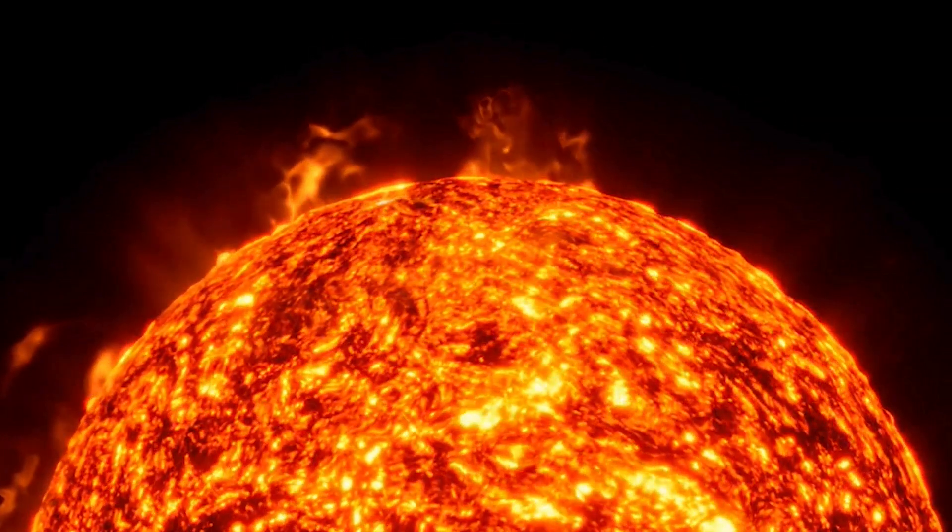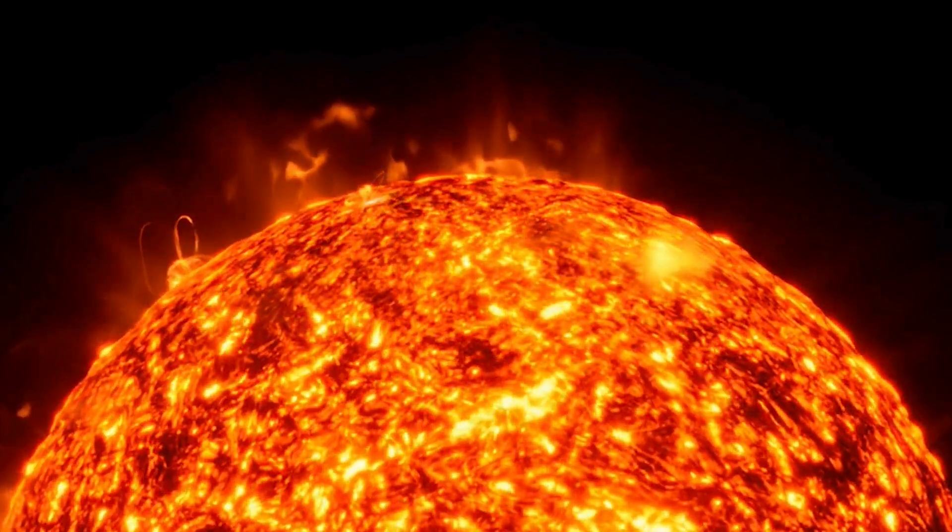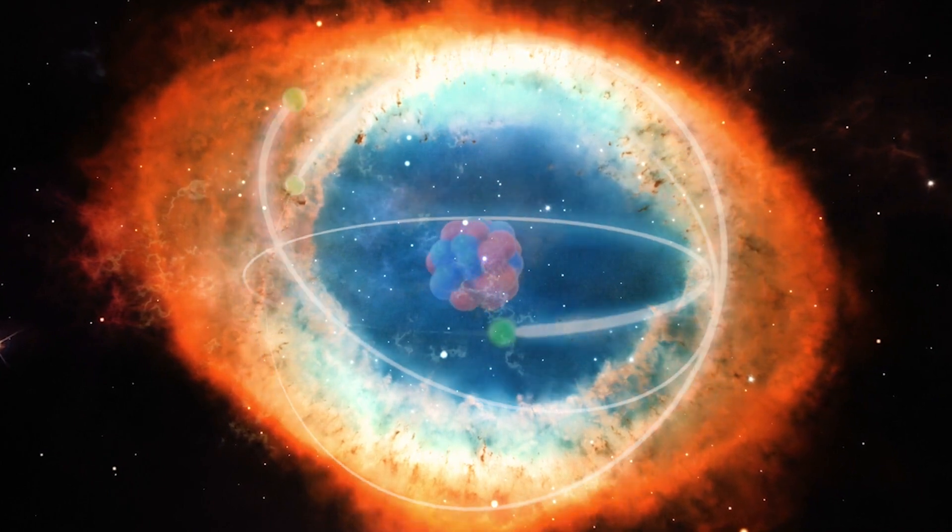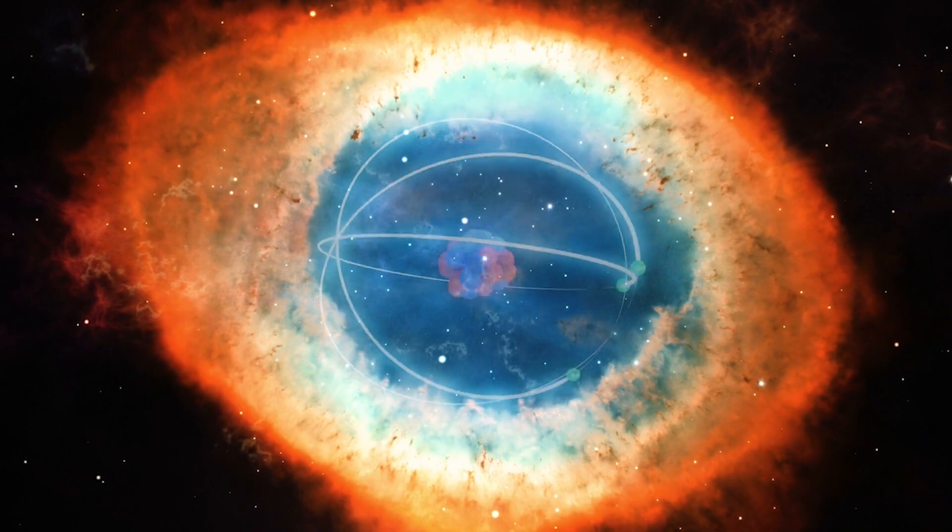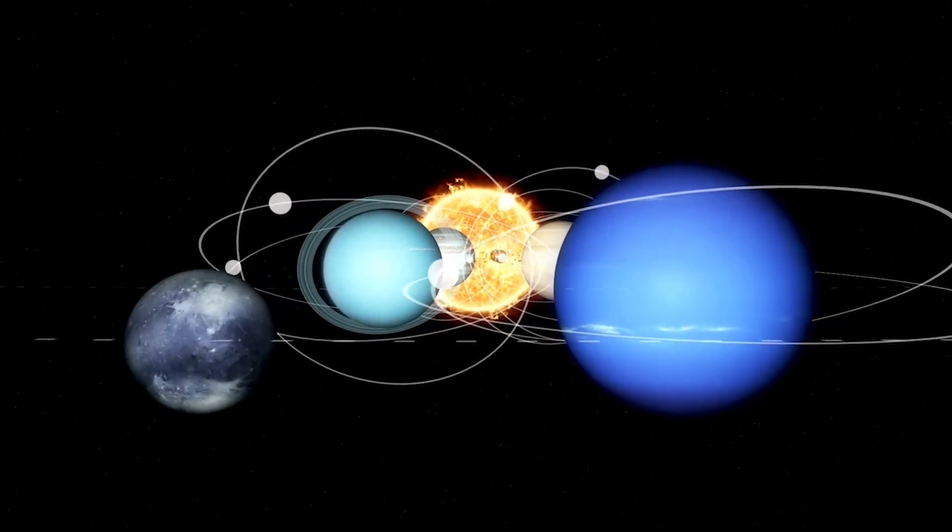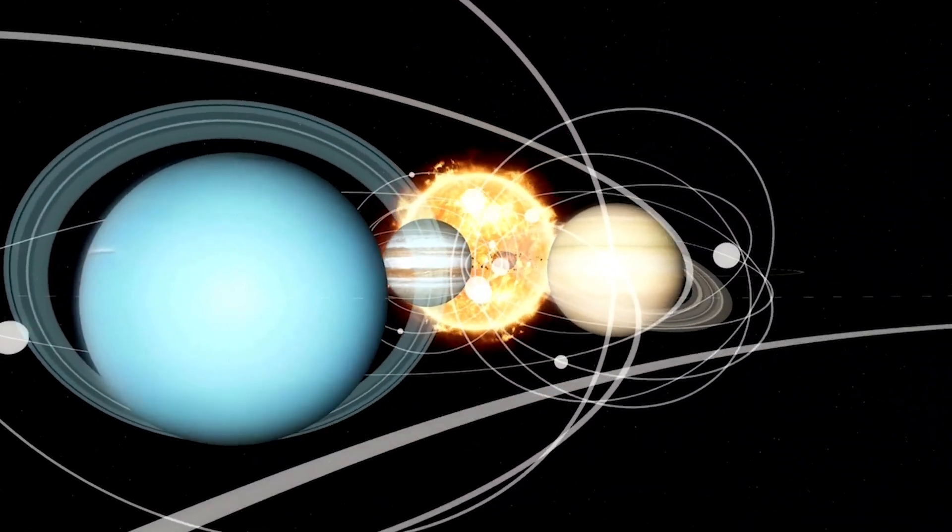This process covers 99.8% of the total mass of the entire solar system. Nuclear fusion produces an immense amount of energy in the form of light and heat. This energy influences the environment of other planets, moons, asteroids, and comets, creating the entire solar system.